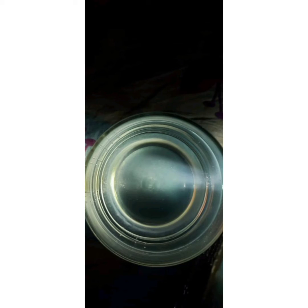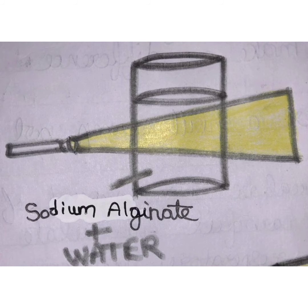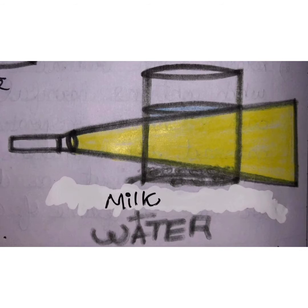In suspension, after a period of time when the particles settle down, the scattering of light is no longer visible. Particle size is largest in suspension — that's why they settle down, and because they settle down, they scatter less light than colloids. Particles are not stable in suspension.